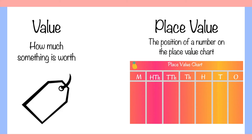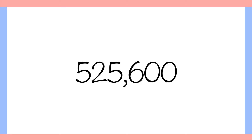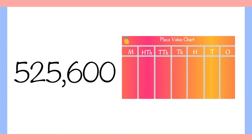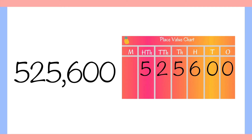In fourth grade, we go up to the millions. In the number 525,600, let's say we need to know the place values of the 2 and the 6. We can put the number in the place value chart like this, starting at the ones place. Now we can easily see that the 2 is in the 10,000th place and the 6 is in the 100th place. That means the value of the 2 is 20,000 and the value of the 6 is 600.